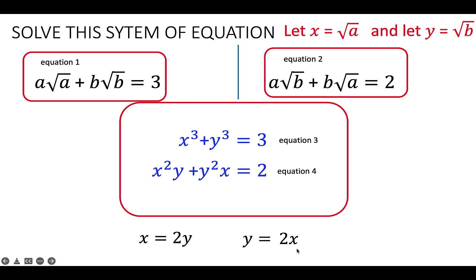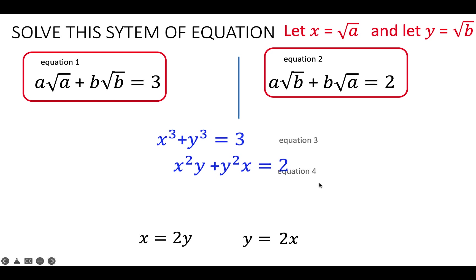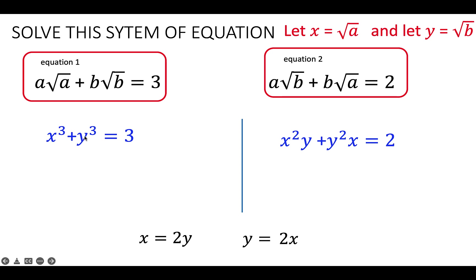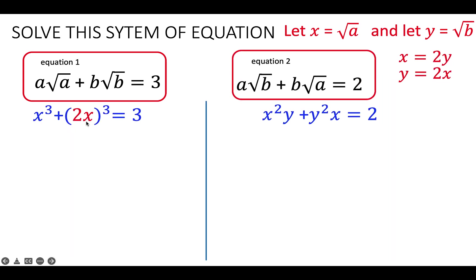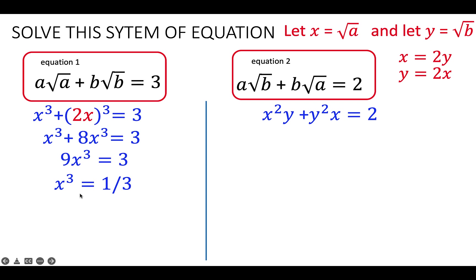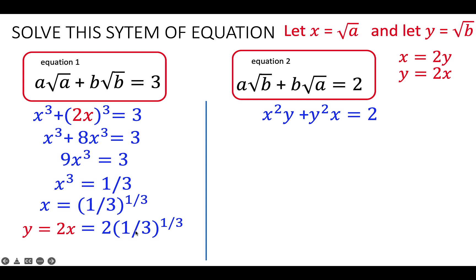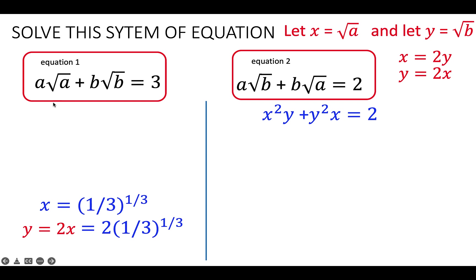Now let's go back to the original equations. We found X equals 2Y and Y equals 2X. Substituting Y equals 2X into equation 3, we replace Y with 2X. With one variable, we can solve: 2 cubed is 8, so X cubed plus 8X cubed equals 9X cubed. Dividing both sides by 9 and taking the cube root gives X equal to (1/3) raised to the 1/3 power. Since Y equals 2X, then Y equals 2 times (1/3) to the 1/3.